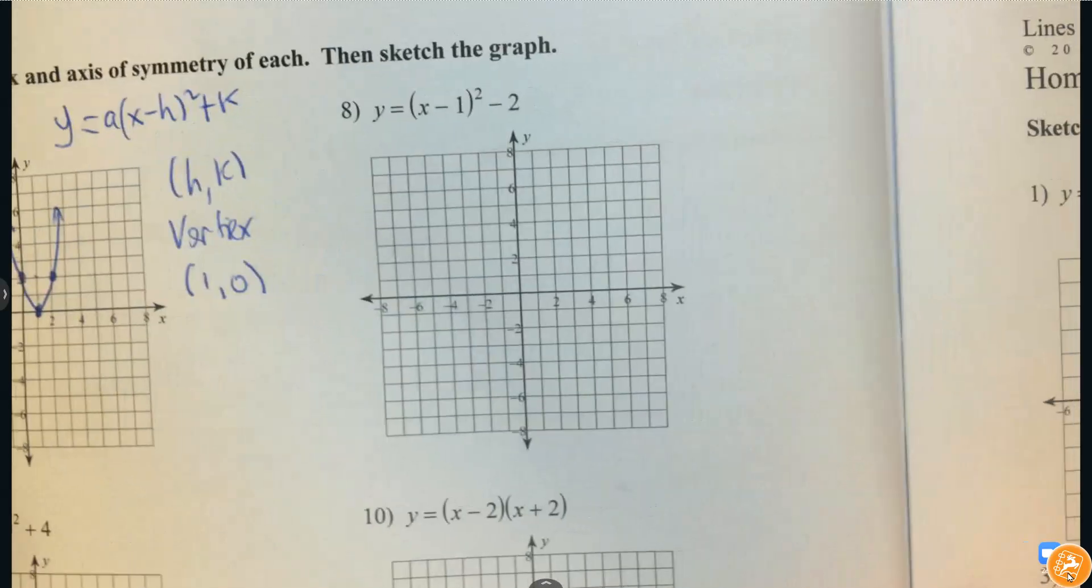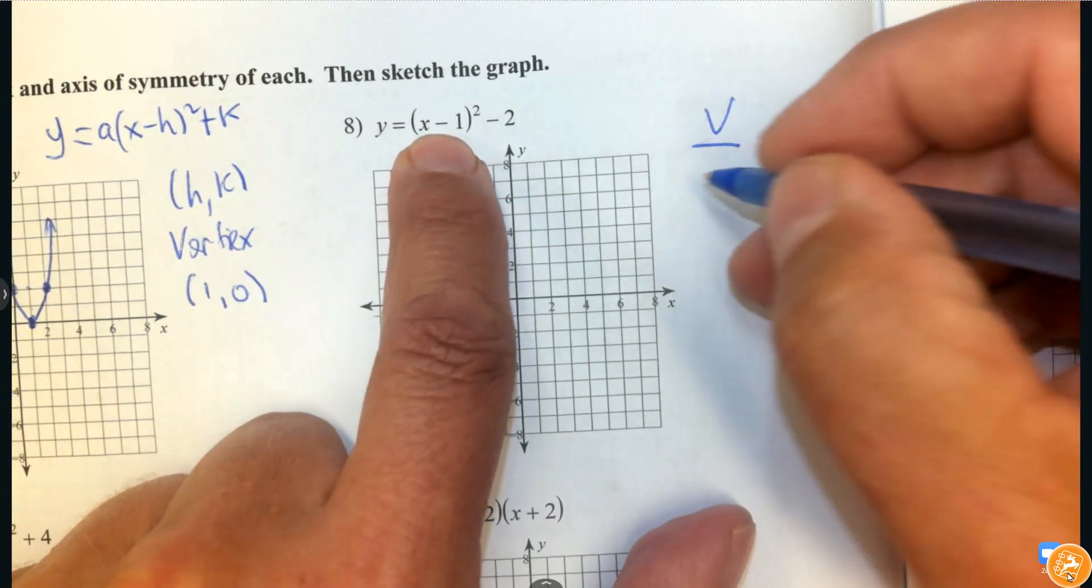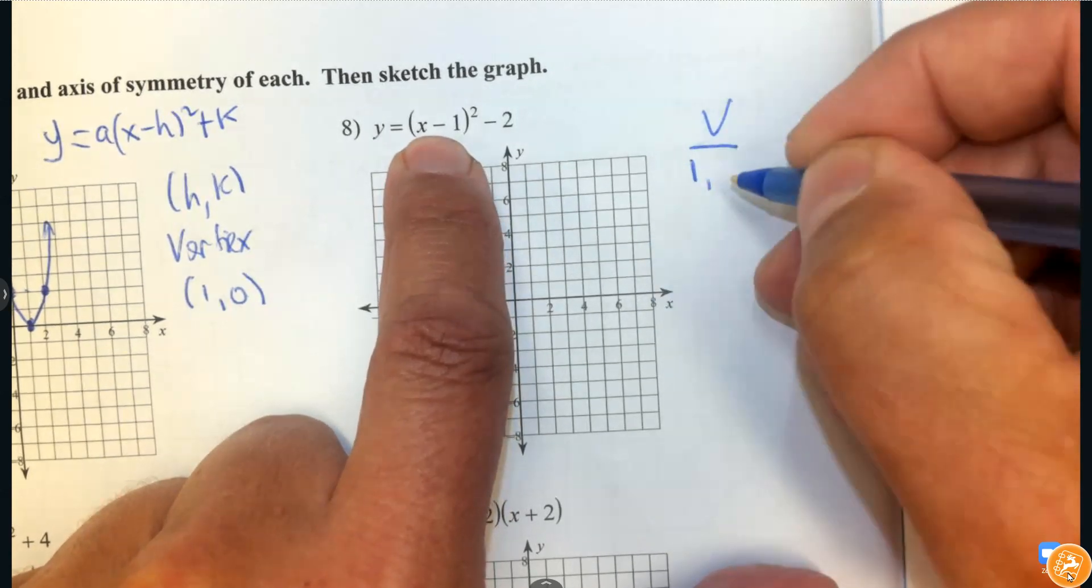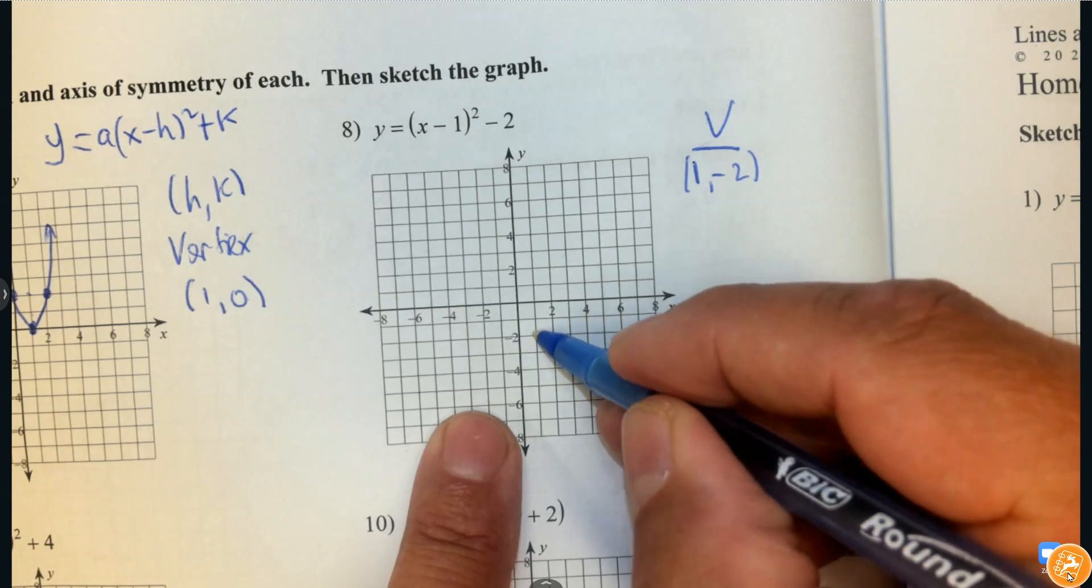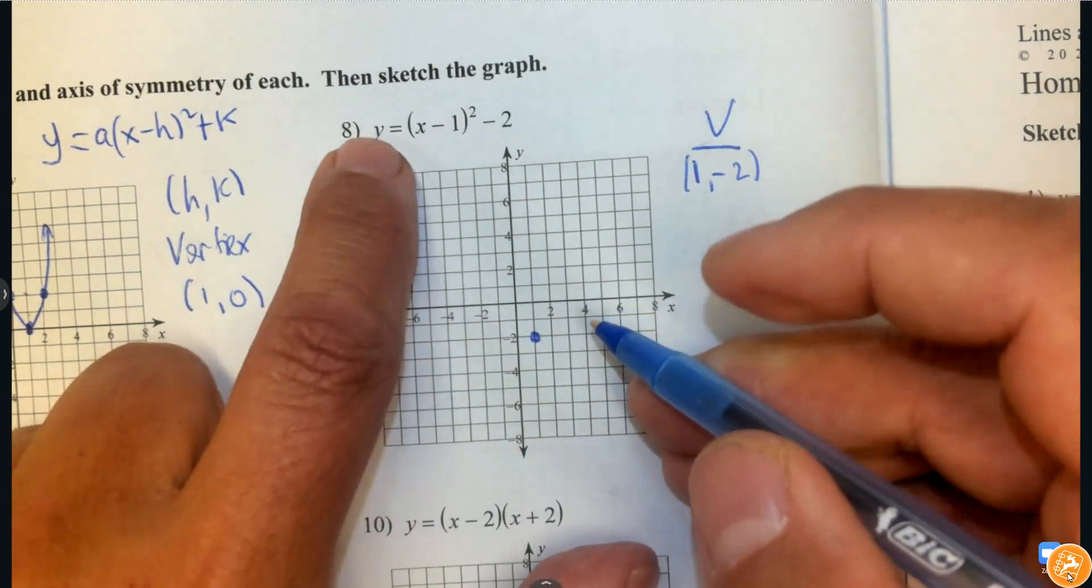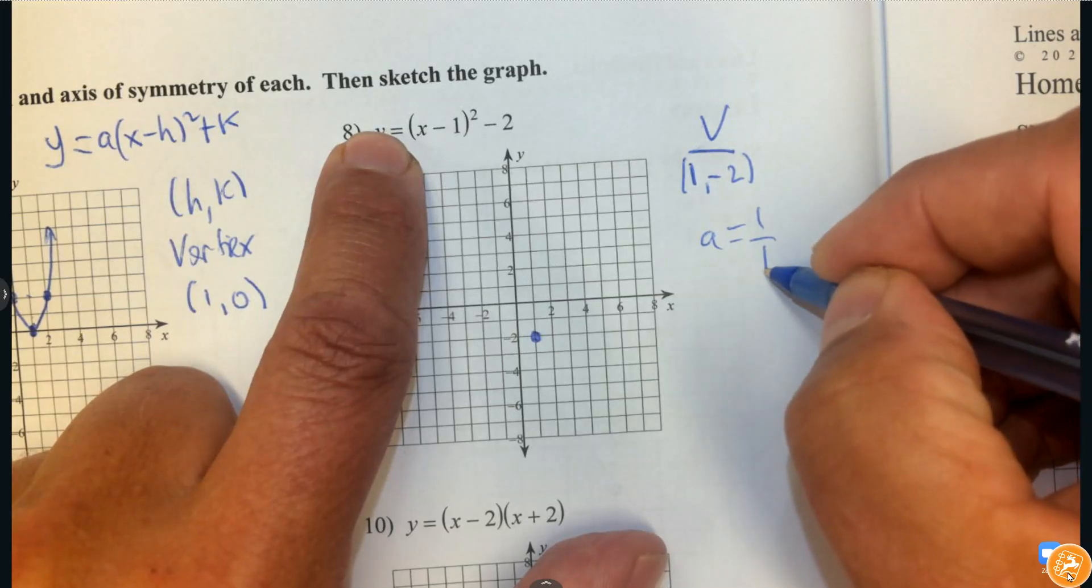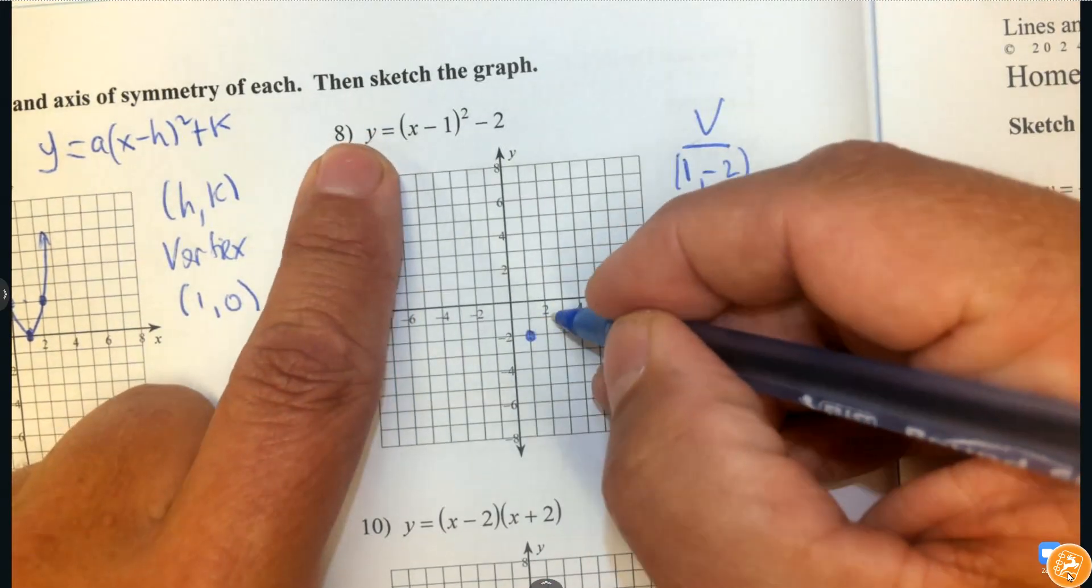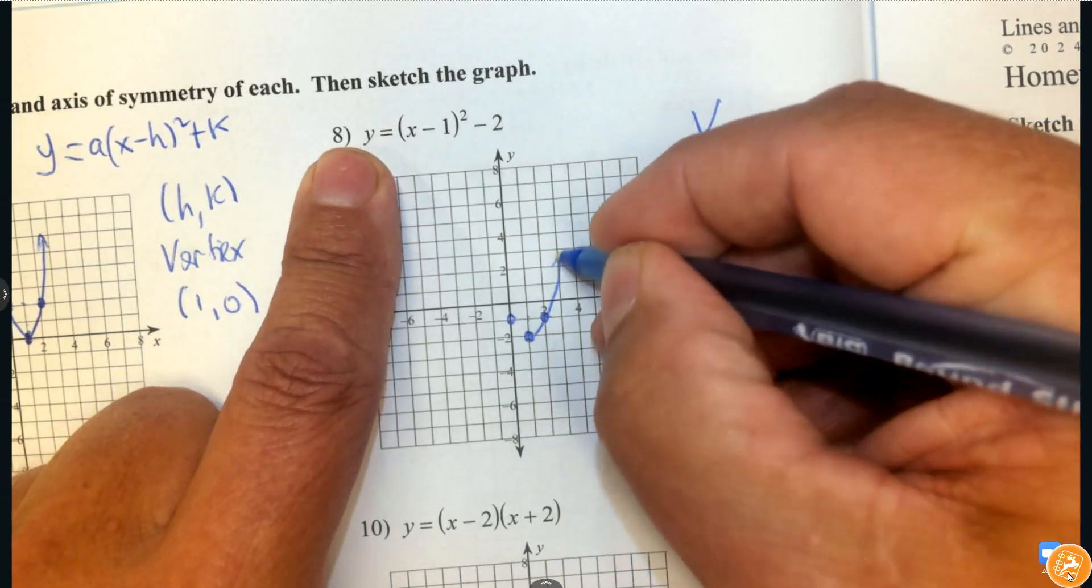Let's try this again. I want to graph this. Inside the, this is going to give me my vertex. Inside the parentheses is positive 1. Outside is negative 2. So that's where I'm going to start for my vertex. So 1 and negative 2. A, the number I don't see in front of the parentheses is 1. I'm going to make it a fraction. That tells me to go up 1 and to the right and up 1 and to the left one. And then draw my parabola.